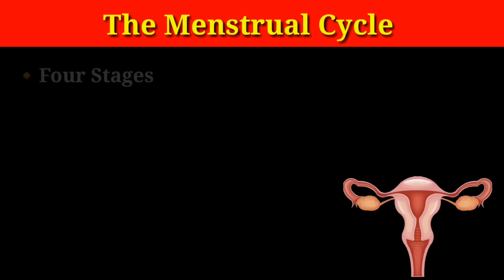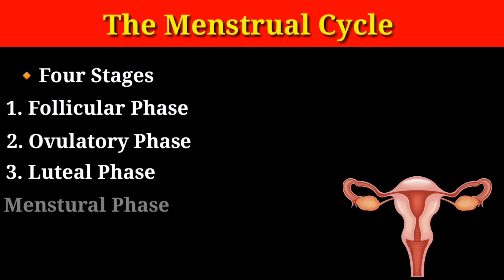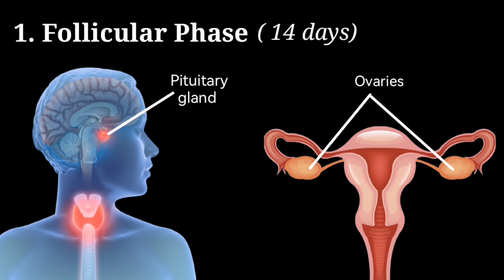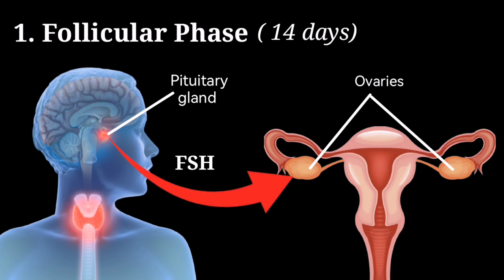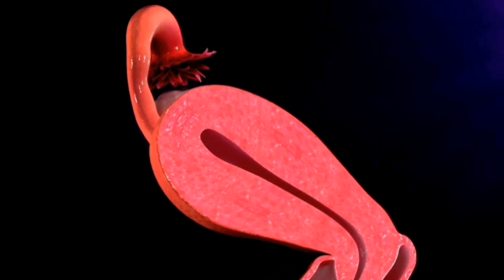The menstrual cycle has four stages: the follicular phase, the ovulatory phase, the luteal phase, and the menstrual phase. The follicular phase is the first stage and lasts for around 14 days. During this phase, the body releases a hormone called follicle stimulating hormone, also known as FSH, which stimulates the ovaries to produce estrogen. This estrogen helps to thicken the lining of the uterus in preparation for pregnancy.